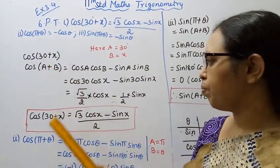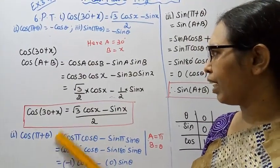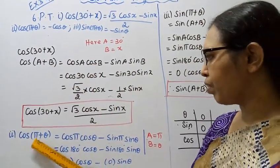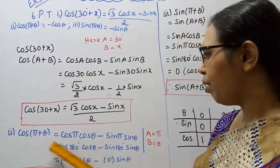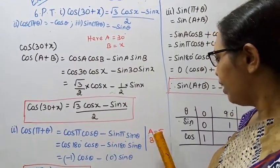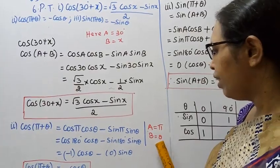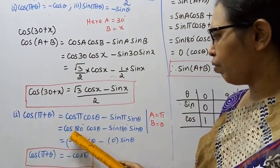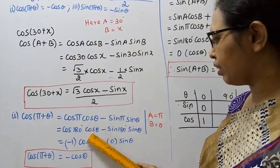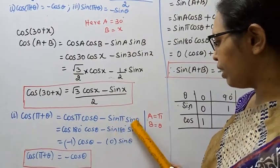Second: cos(π + θ). Using cos(a + b) = cos a cos b - sin a sin b, where a = π, b = θ. Since π = 180°, we get cos 180° cos θ - sin 180° sin θ.